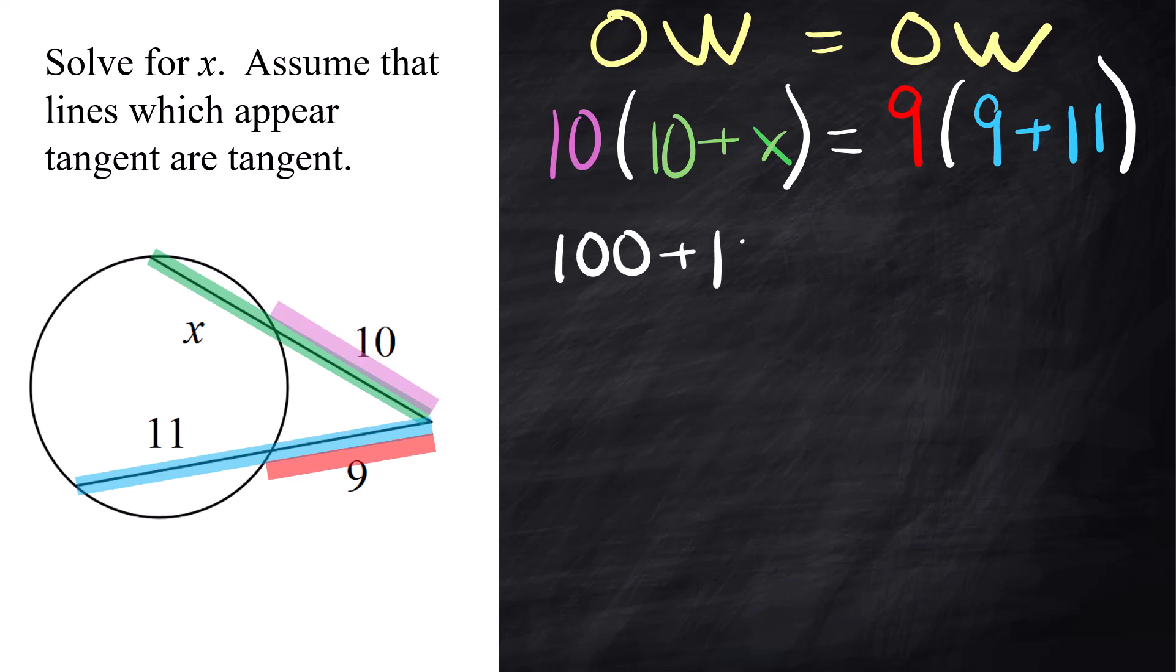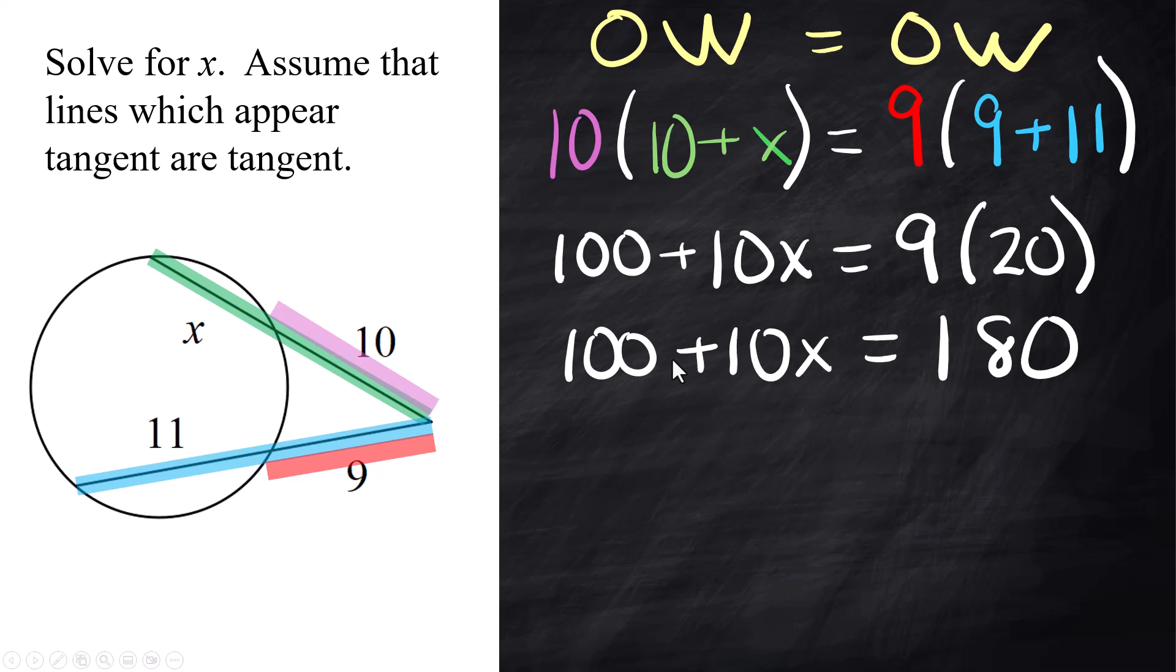Alright, next line is me doing distributive property in the first half. 10 times 10 is 100. 10 times x is 10x. And then we have 9 times 20. I'm not going to do distributive property on this one here because I can just add 9 and 11. So 9 times 20 is 180. So here I am with 100 plus 10x equals 180. So let's solve for x by subtracting 100 from both sides. We get 10x equals 80. Divide both sides by 10. I want you to do that in your head. x equals 8. And we have done it.